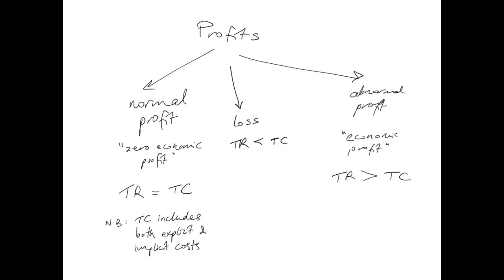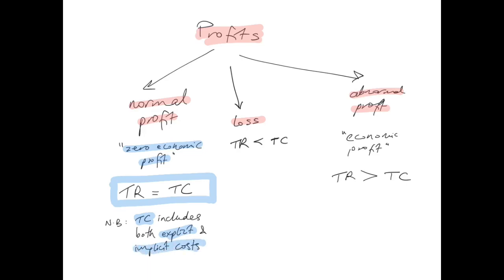Now that we've covered production, costs, and revenue, it's time to talk about profits. A business can earn a normal profit, make a loss, or earn an abnormal profit. A normal profit — also called zero economic profit — is when total revenue is just enough to cover total costs. Students often find this confusing, but total cost here includes both explicit and implicit costs, so the opportunity cost of the entrepreneur's time is already included.